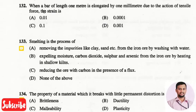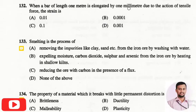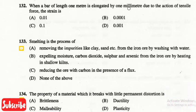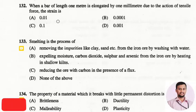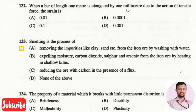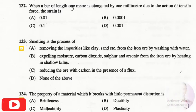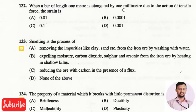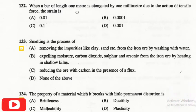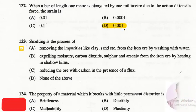The next question is: when a bar of length one meter is elongated by one millimeter due to a tensile force, the strain is? Strain is defined as change in length divided by original length. The elongation is 1 mm and the original length is 1 m, giving 1/1000. So the right answer is option four, that is 0.001.